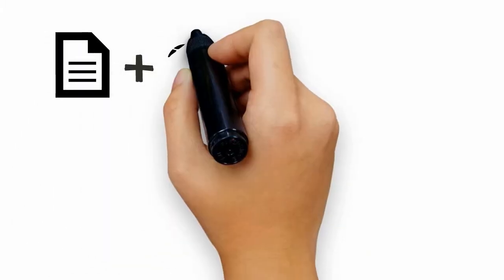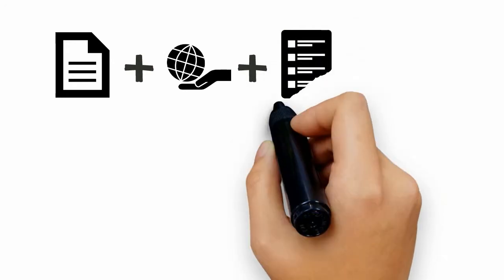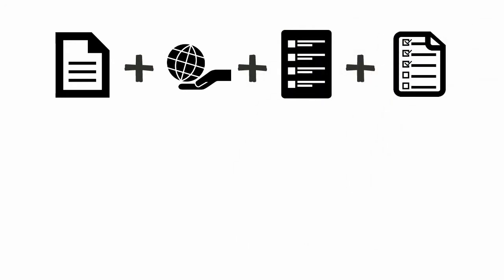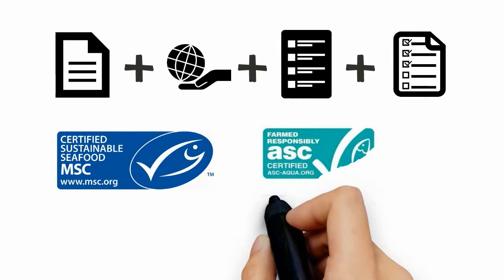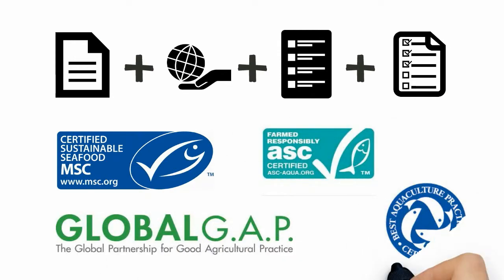So with data showing good stewardship, a plan and compliance, fishers and farmers can be certified as being sustainable by NPOs such as the MSC, ASC, Global Gap, and BAP.